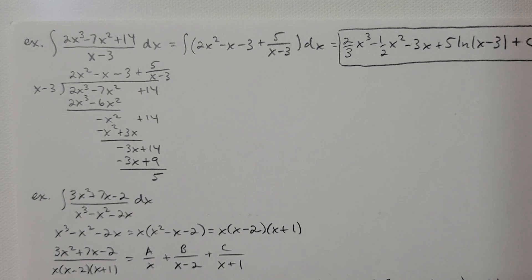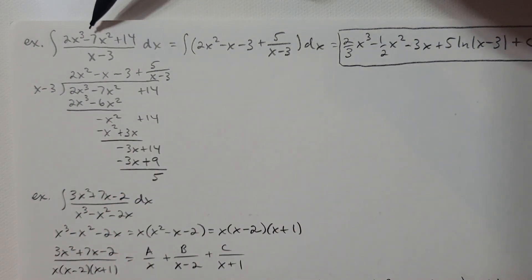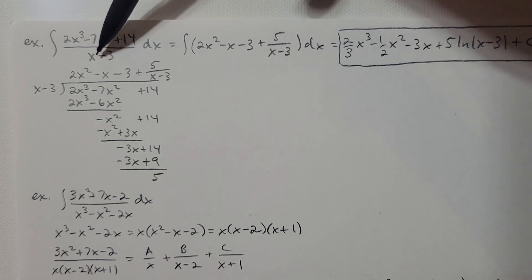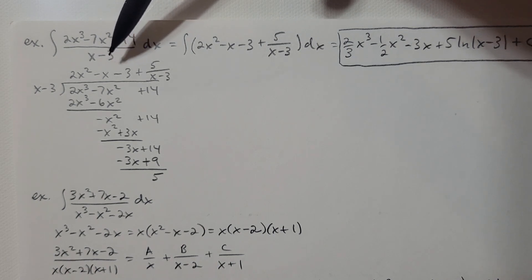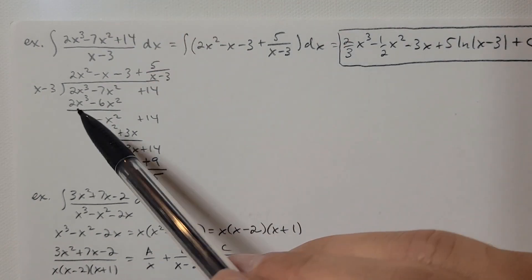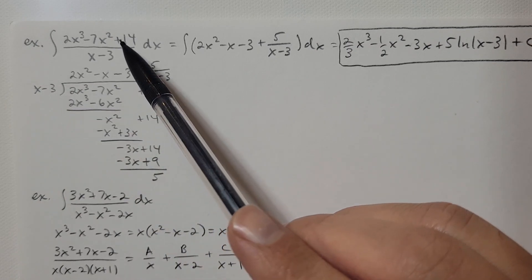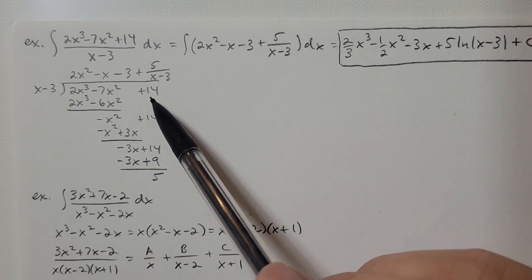The first thing I'm looking for is if I can go straight to the answer — that's great. Or if I can make a u-substitution, that's also great. But notice that the degree of the top is more than the degree of the bottom. I have a degree 3 polynomial on top divided by a degree 1 polynomial on the bottom. So the first thing I'm going to do is divide. The expression in the denominator always goes outside the division bar, and the numerator goes underneath.